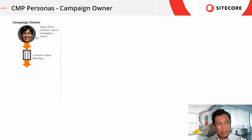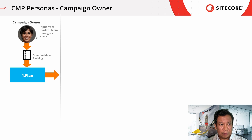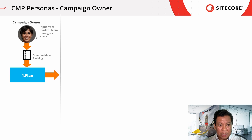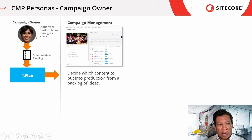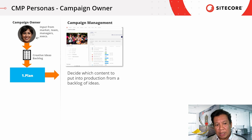Let's start with the campaign owner. She's responsible to take input from the market, team leaders, and managers and manage it inside a creative ideas backlog. At each sprint, she will prioritize and plan which content items to put into production. The CMP helps her with the campaign manager that gives her the ability to promote content ideas from backlog, apply story points, update content briefs, and assign tasks to her team members.